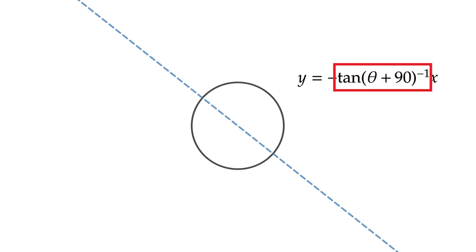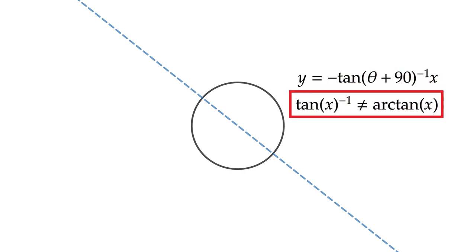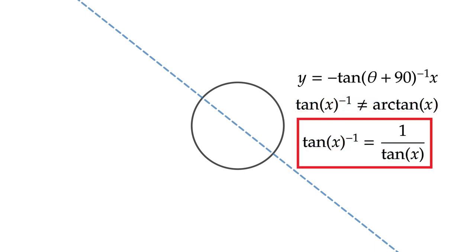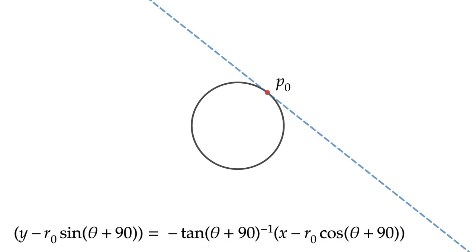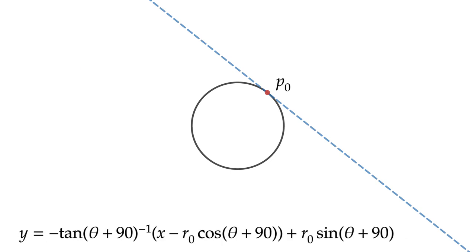It's important to realize that in this instance, tan x to the negative 1 is not equal to arc tan x, but rather tan x to the negative 1 equals 1 over tan x. We can then shift this line to point P0, which can be represented as R0 cosine theta plus 90, R0 sine theta plus 90. Substituting for P0, we get y minus R0 cosine theta plus 90 equals negative tan theta plus 90 to the negative 1 times x minus R0 cosine theta plus 90. In solving for y, y equals negative tan theta plus 90 to the negative 1 times x minus R0 cosine theta plus 90 plus R0 sine theta plus 90.